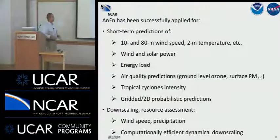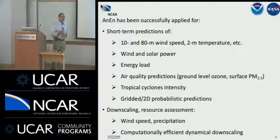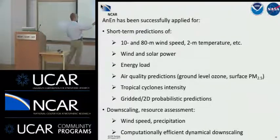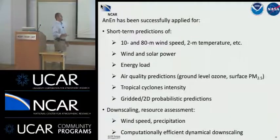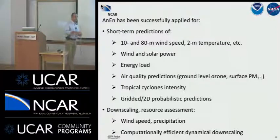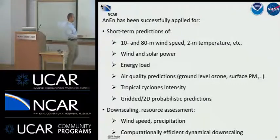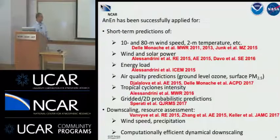We apply this technique to a range of applications: prediction of several weather parameters including 10-meter wind speed, 2-meter temperature, relative humidity, and surface pressure. We've extensively used it for renewable energy applications — prediction of wind and solar power and energy load. We apply it for air quality prediction, for prediction of tropical cyclone intensity, and for generation of graded two-dimensional probabilistic predictions rather than at single points. We've also implemented this technique for downscaling resource assessment for both wind speed and precipitation, and we've reported all this work in the literature.